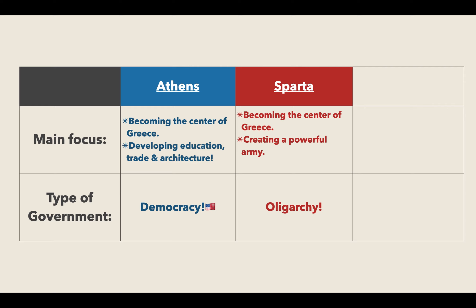Therefore they would become the most powerful center of Greece. The type of government that existed in ancient Sparta was something known as an oligarchy. An oligarchy is a government where only a few people have all of the power. So instead of having one king, you had like three or four very rich people who became kings and were in charge of the government.